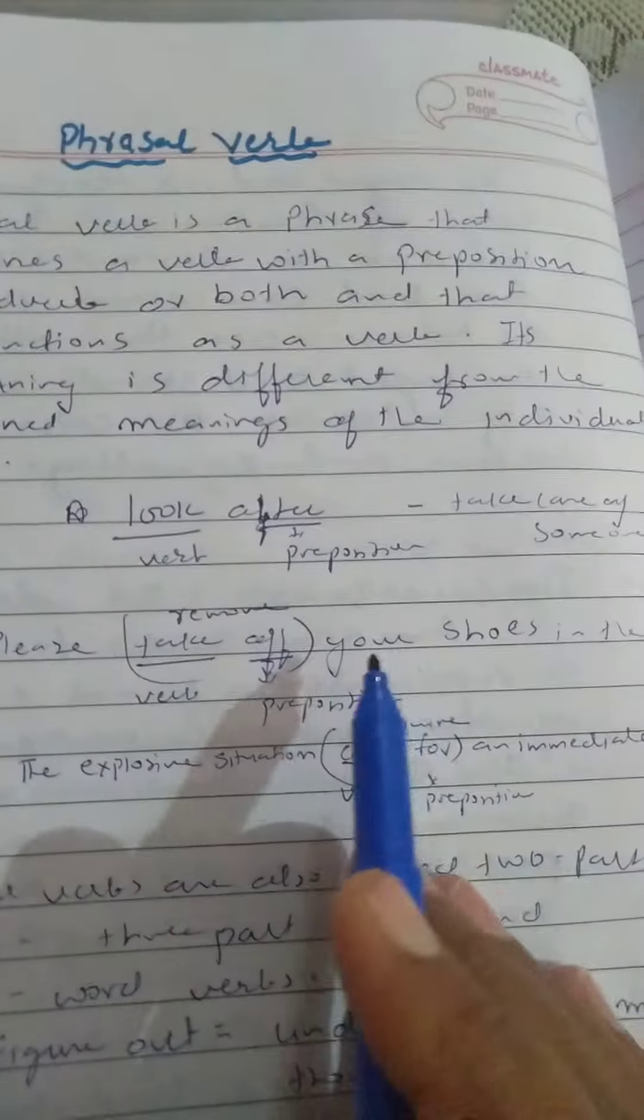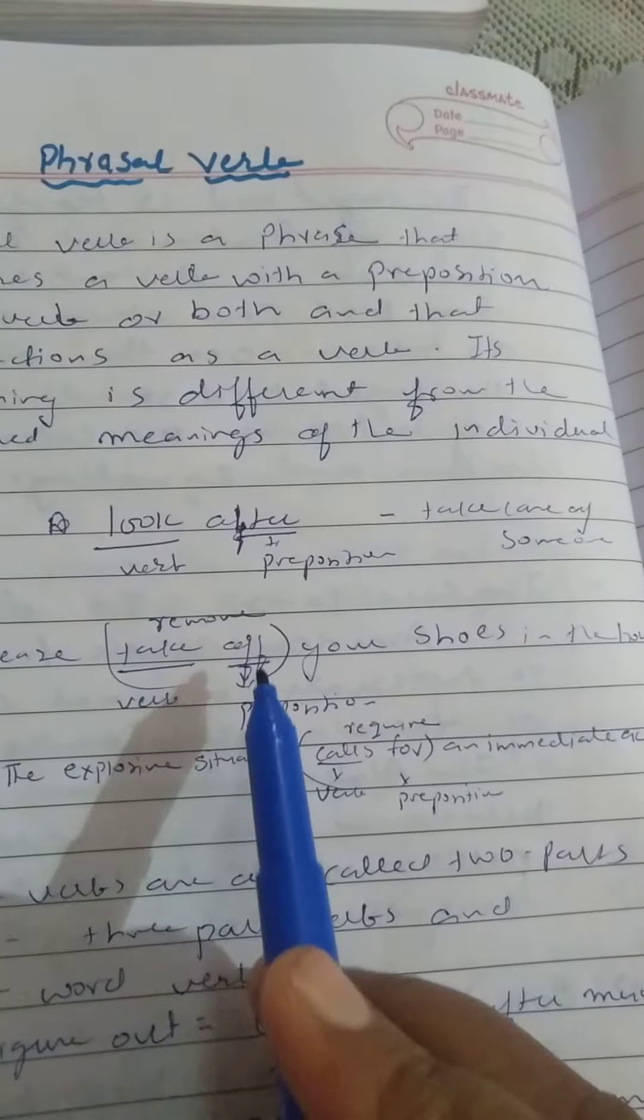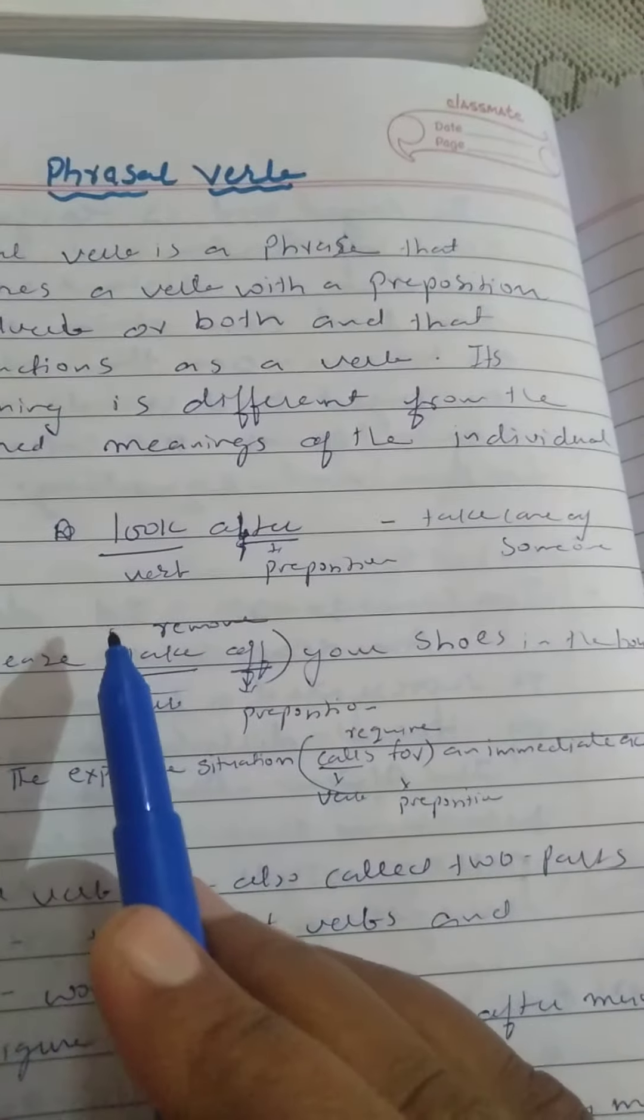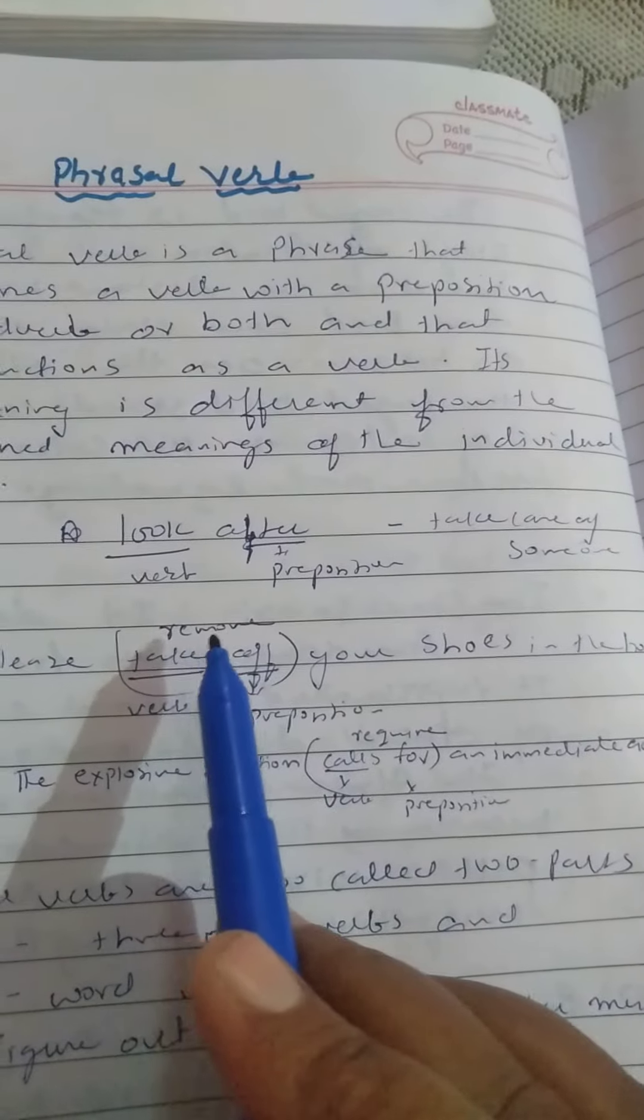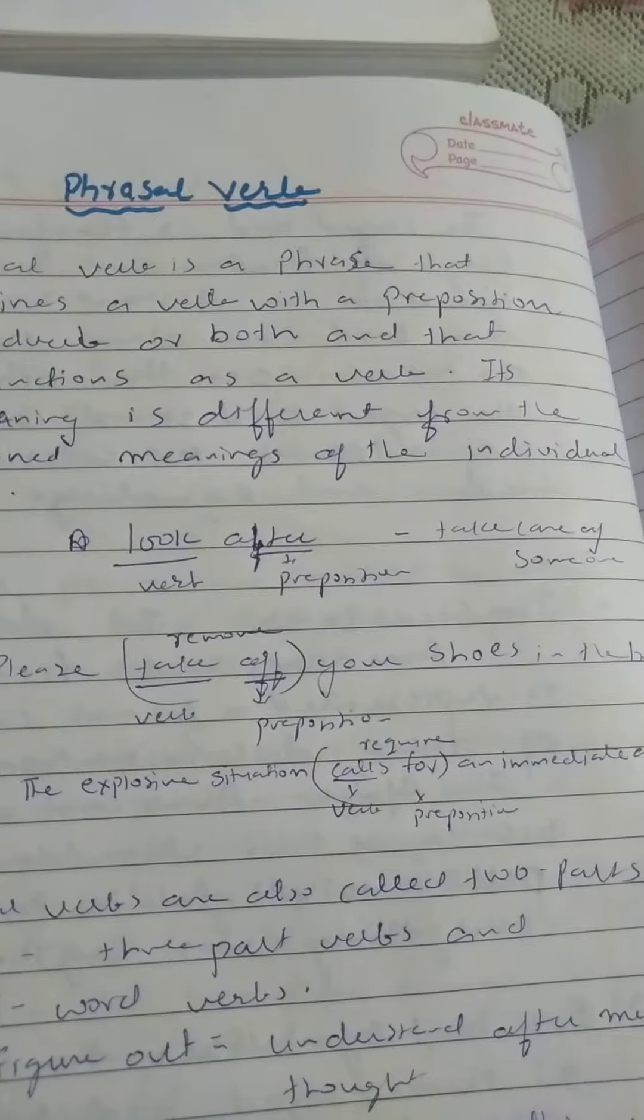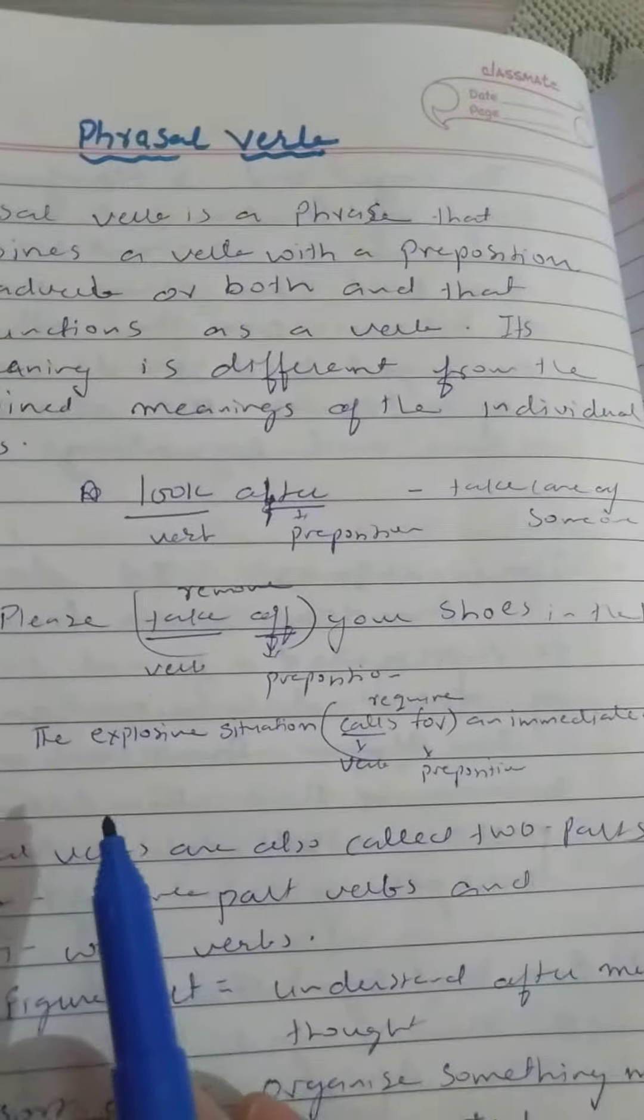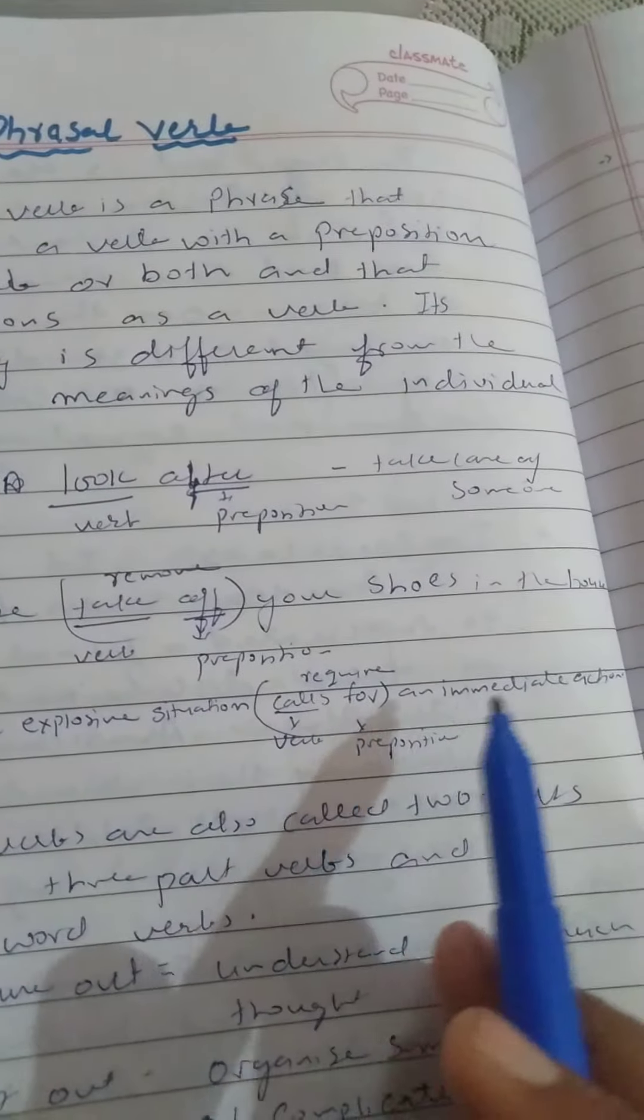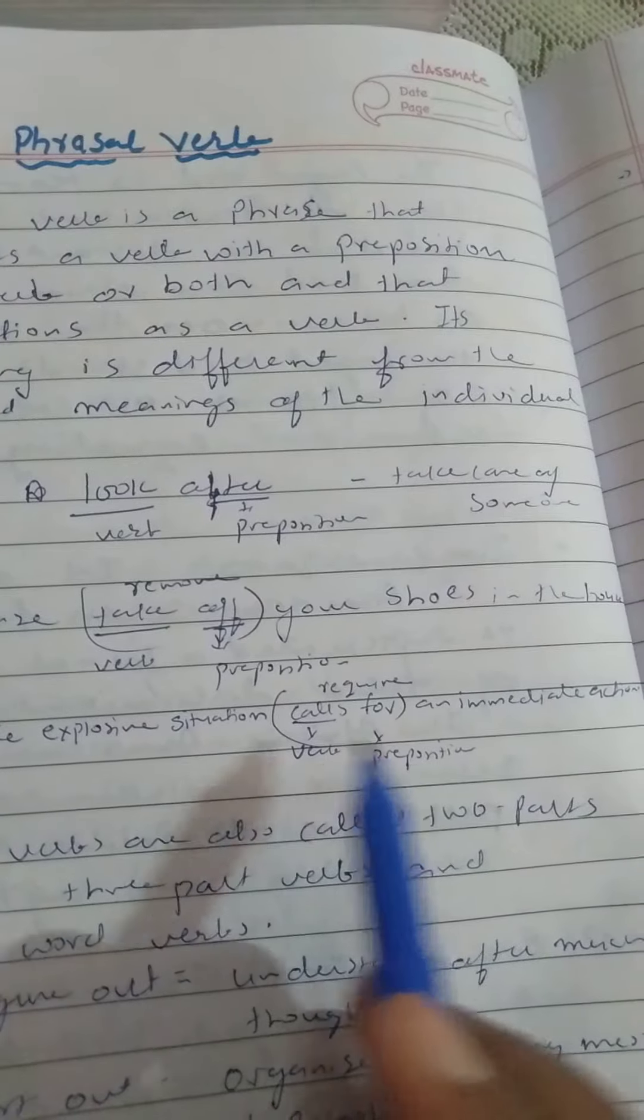Similarly, let's take another example. Please take off your shoes in the house. Now here, take is a verb, off is a preposition. But when we combine these two, we are having a completely different meaning—that is remove. Please remove your shoes in the house. Next, the explosive situation calls for an immediate action. Calls is a verb, for is a preposition.